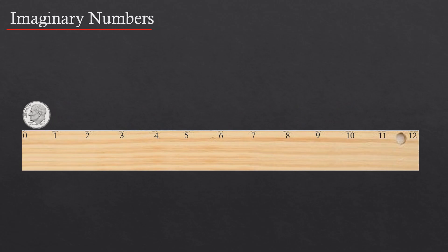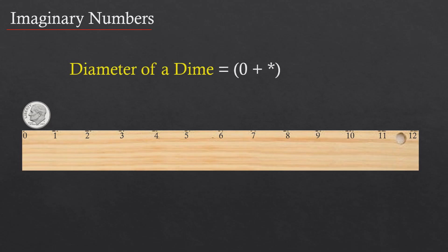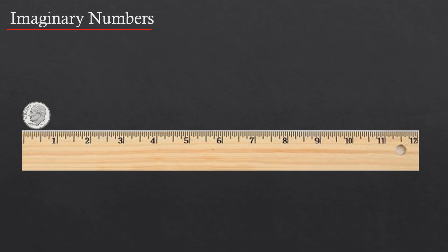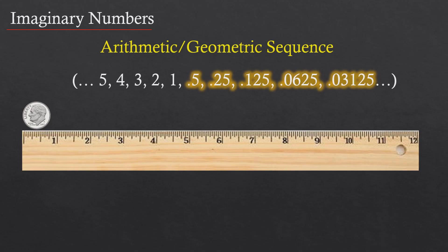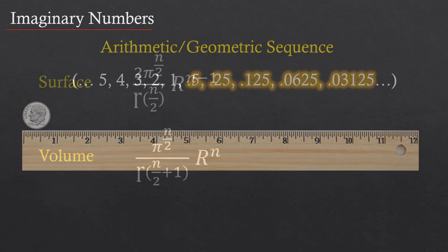This makes absolutely no sense since we can clearly see that the dime has a diameter. So the diameter of a dime, when adhering strictly to an arithmetic sequence, becomes 0 inches plus something else denoted with an asterisk, where the asterisk is defined as a number greater than 0 but less than 1. Alternately, if we don't adhere rigidly to the arithmetic sequence, we can understand that 0 isn't the only number that can follow 1 — it can also be followed by one-half, one-quarter, one-eighth, etc., all the way to infinity. This is an arithmetic-geometric sequence, and this is the way we typically use a ruler. This sequence produces the result that a dime has a diameter of about three-quarters of an inch.